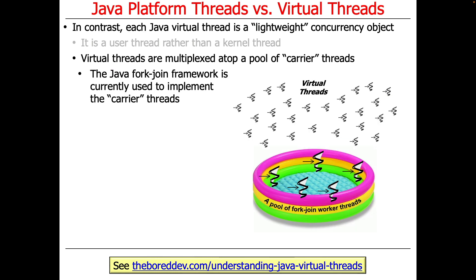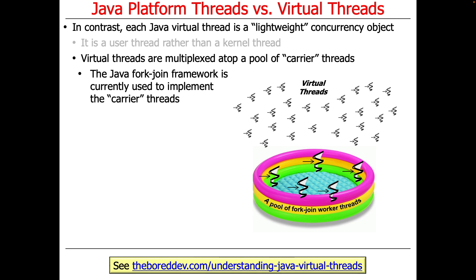Right now, the Java fork-join framework is used to implement the carrier threads and the virtual threads that run on top of them. We won't talk a lot about the Java fork-join framework in this class — I have another class that goes into that in great detail, and you can look at some videos on my website if you want to learn more.